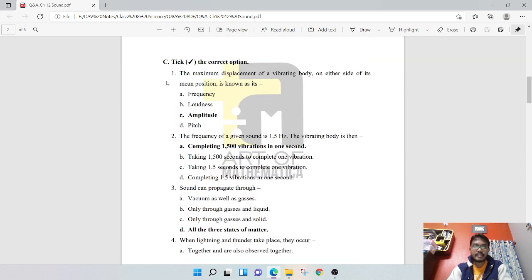Next is tick the correct option. The maximum displacement of a vibrating body on either side of its mean position is known as amplitude. The frequency of a given sound is 1.5 hertz means the vibrating body is completing 1500 vibrations in one second. That's the definition of frequency, 1500 vibrations in one second.